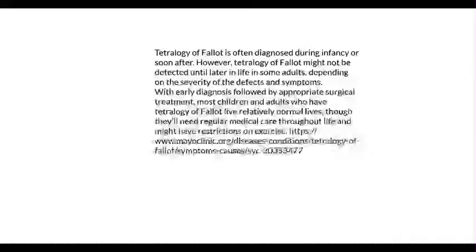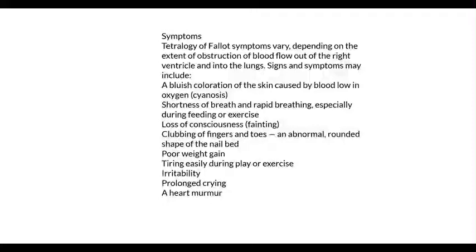Some of the symptoms you'll see with kids with tetralogy of Fallot vary depending upon the extent of obstruction of blood flow out of the right ventricle and into the lungs. Children with tetralogy of Fallot have pulmonary stenosis, sometimes pulmonary atresia. Obviously if there's not a lot of blood going to the lungs, they're going to have signs and symptoms that may include a bluish coloration of the skin caused by blood low in oxygen — cyanosis — and shortness of breath and rapid breathing, especially during feeding or exercise.